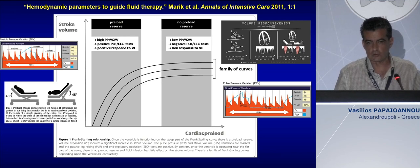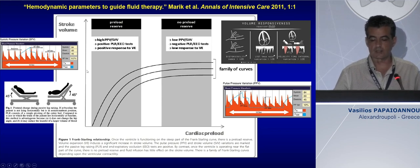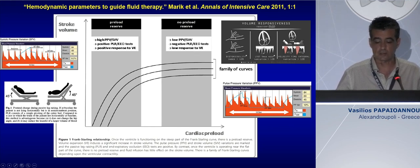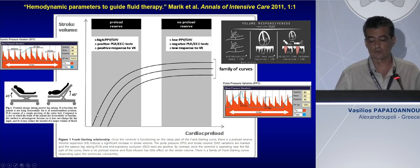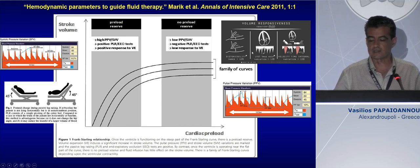So we have to determine at which part of the Frank-Starling curve our patient is situated. We can evaluate this by different metrics currently implemented in the ICU, such as systolic pressure variation, pulse pressure variation, the classic passive leg raising maneuver to evaluate if it can increase cardiac output more than 10 or 12 percent, or respiratory variation of the IVC and the LVOT maximum velocity.